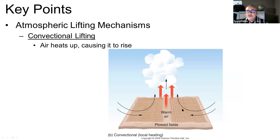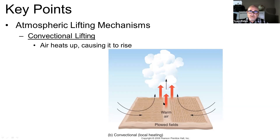A second way is called convectional lifting. This is about the differences between land and water. Moist air can come over the ocean and then be over land that is much warmer, and the warmer land causes the air to convect — warm up and move upward. It's called convectional lifting, like a convection oven. Same principle as a hot air balloon: heat up the air and the air rises.